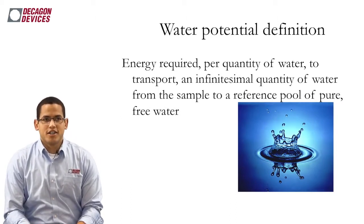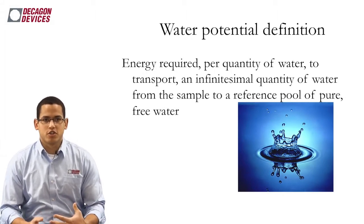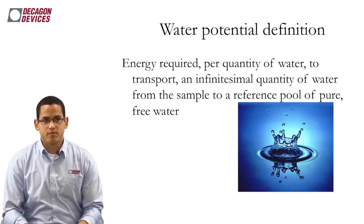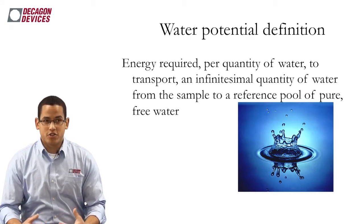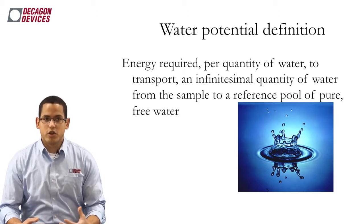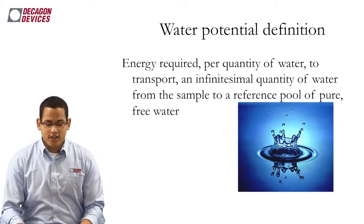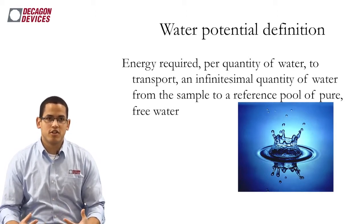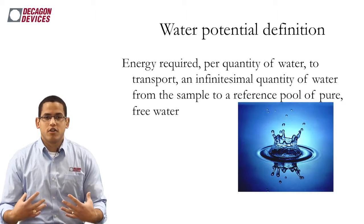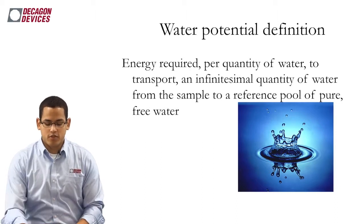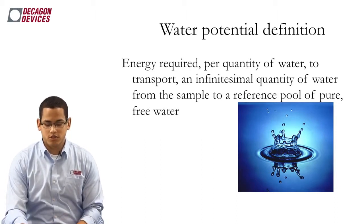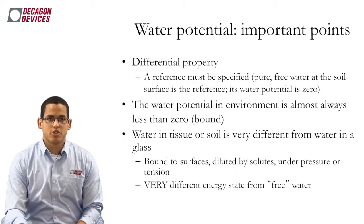First, I want to start out by defining water potential and going over a quick overview of what was discussed in Water Potential 101 and 201. Water potential is defined as the energy required per quantity of water to transport an infinitesimal quantity of water from the sample to a reference pool of pure free water. An easier way to look at this is that in soils, water potential is essentially the energy required for a plant to pull water out of the soil.